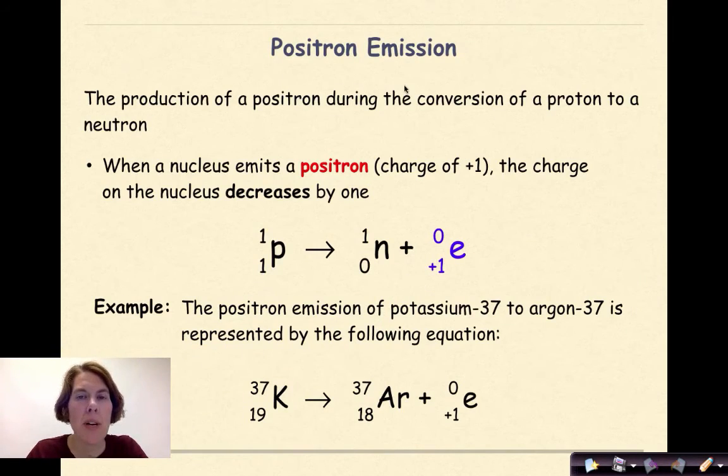Let's talk about positron emission. The production of a positron during the conversion of a proton to a neutron. When a nucleus emits a positron with a charge of plus 1, the charge on the nucleus is going to decrease by 1. So here I have a proton becoming a neutron and a positron is emitted.